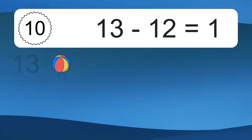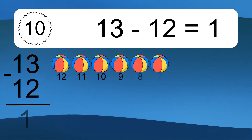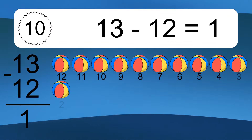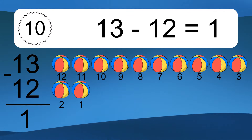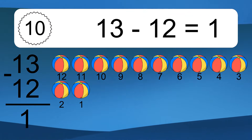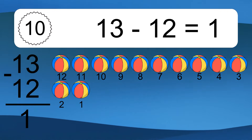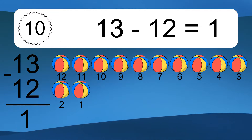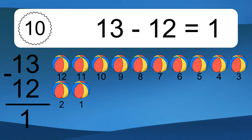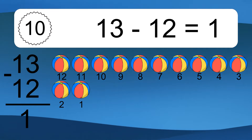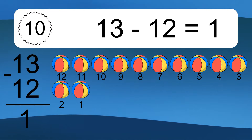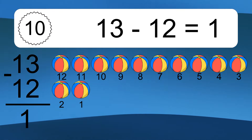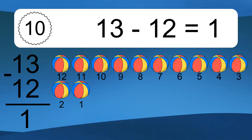13 minus 12 equals 1. Let's count it: 12, 11, 10, 9, 8, 7, 6, 5, 4, 3, 2, 1.